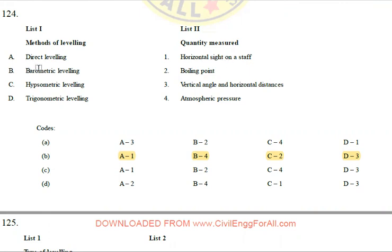Next, barometric or parametric leveling is based on atmospheric pressure — it uses hypsometric methods. Trigonometric leveling uses the vertical angle and horizontal distance measured from the ground.